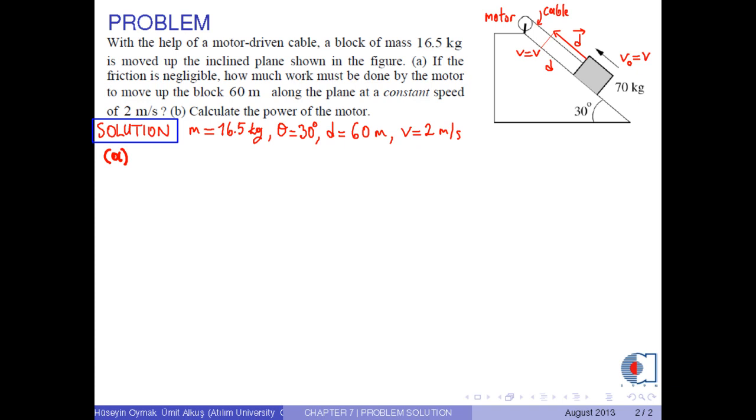To solve part A, we use the kinetic energy work theorem. Delta K equals K2 minus K1 equals total work. Since the speed of the block is constant, there is no change in the kinetic energy. Therefore, the total work is zero.